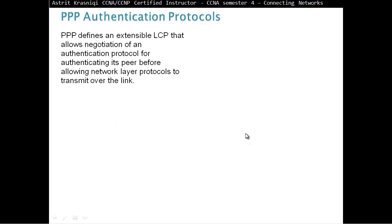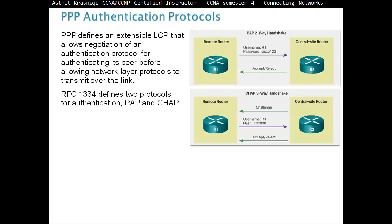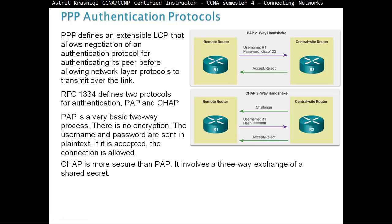PPP Authentication Protocols defines an extensible LCP that allows negotiation of an authentication protocol for authenticating its peers before allowing network layer protocols to be transmitted over the link. RFC 1334 defines two protocols for authentication: PAP and CHAP. PAP is very basic, a two-way process — there is no encryption; the username and password are sent in plain text, which is not very good.